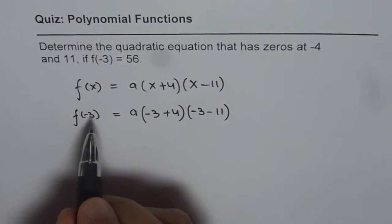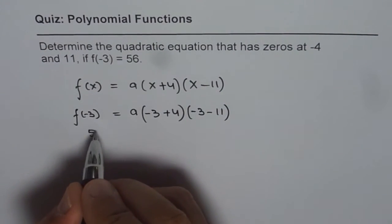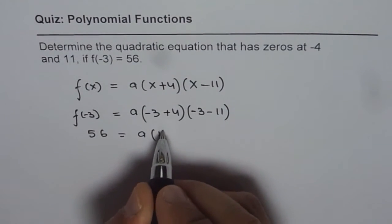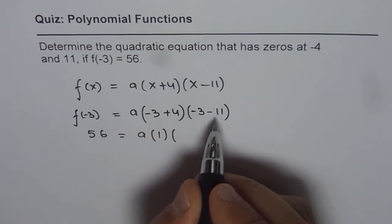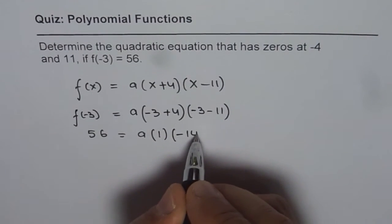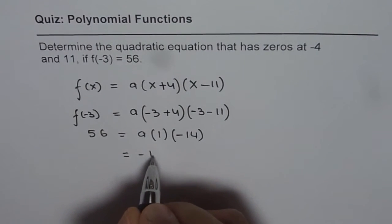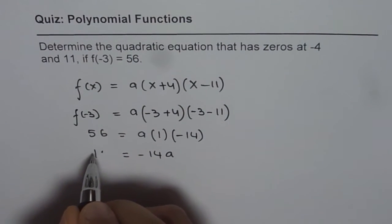And we know f(-3) is 56. So we can write here 56 equals to a times -3 plus 4 is 1, and minus minus is -14.